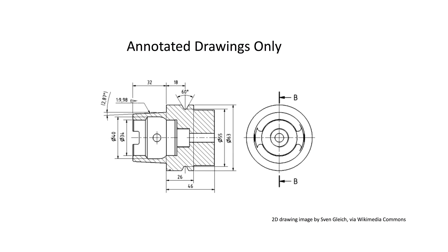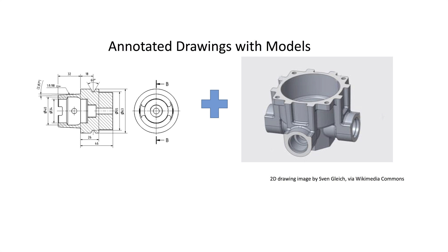That came in three formats. The first is drawing with a model, which means they're putting all the GD&T — or geometric dimensioning and tolerancing — material information, surface finish, and administrative information such as the part number and description on the 2D drawing, and then also sending a 3D model, whether it's a native format like CREO, SolidWorks, CATIA, NX, or Inventor, or a downstream derivative like a STEP file, a JT file, or some other translated 3D format.